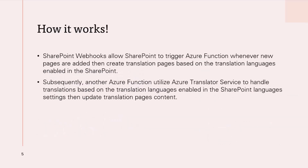Now, how it works. SharePoint webhooks allow SharePoint to trigger an Azure Function whenever new pages are added to site pages. The Azure Function will then create translation pages based on the translation languages you enabled in SharePoint. Subsequently, another Azure Function will utilize Azure Translator Service to handle the translations and update the translation pages with the translated content.